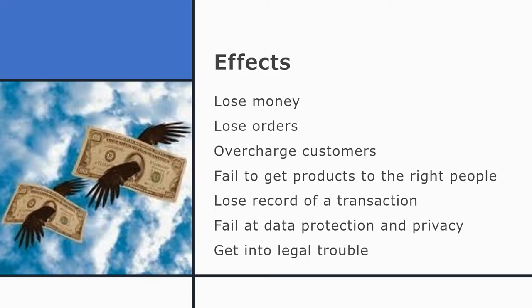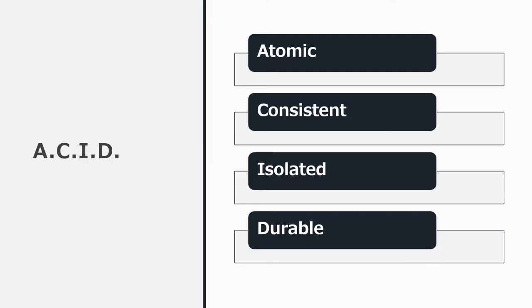All of these problems with transaction processing can lead to businesses losing money, getting a bad reputation, or even getting into legal difficulties. So it's very important that the organizers of Nonstock — or any other transaction processing system — design it to avoid those problems. There's a checklist with the acronym ACID that reminds you of how transactions should be processed.